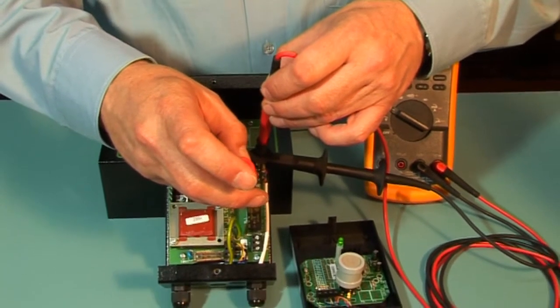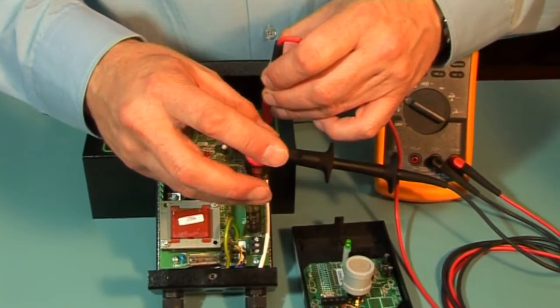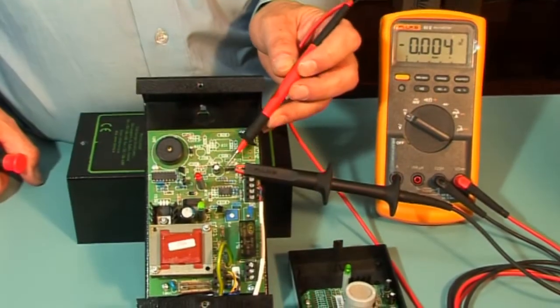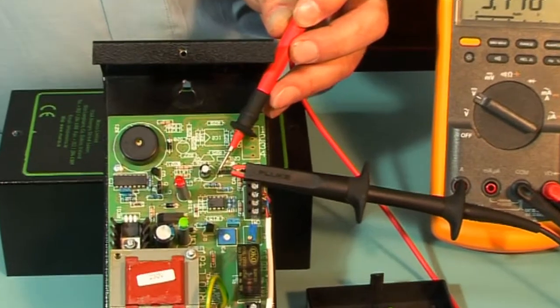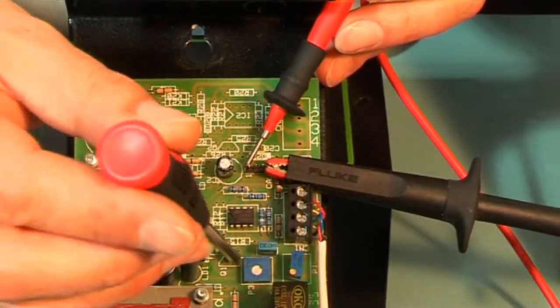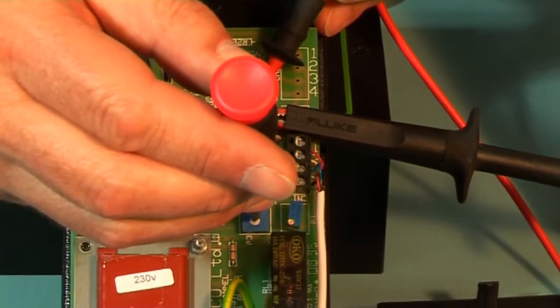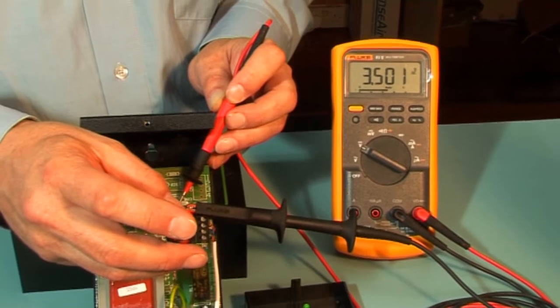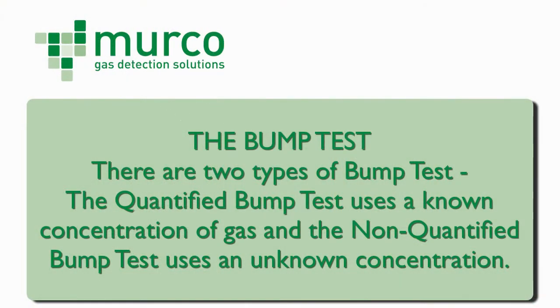If different to the label factory voltage, then adjust P1 to the standby voltage as per the rating label. Move the positive lead from pin 2 CN1 to pin 1 on the CAL header and adjust P3 to 3.5 volts or as per the alarm voltage as shown on the rating label. There are two types of bump test: the quantified bump test uses a known concentration of gas and the non-quantified bump test uses a non-known concentration.